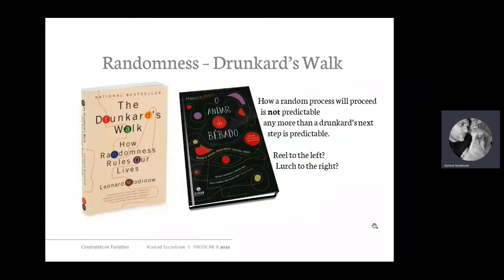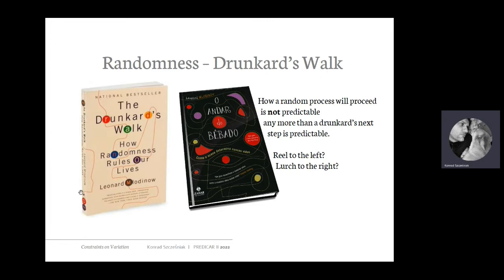One way to think about it is to apply the metaphor of the drunkard's walk — the metaphor found in the title of the book by Leonard Mlodinow, 'The Drunkard's Walk: How Randomness Rules Our Lives.' The idea is basically that how a random process will proceed is not predictable, any more than a drunkard's next step is predictable. If you imagine a drunkard walking and freeze the video, asking where the person's next step will be — it's anybody's guess.